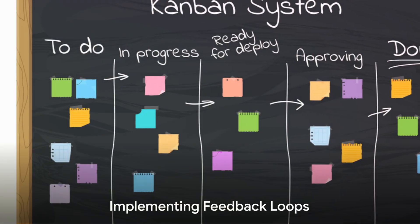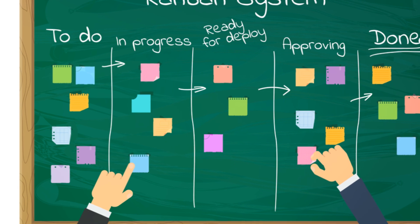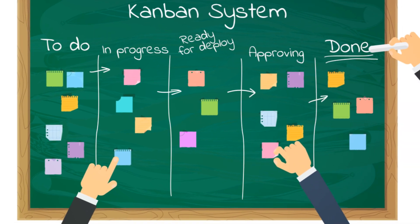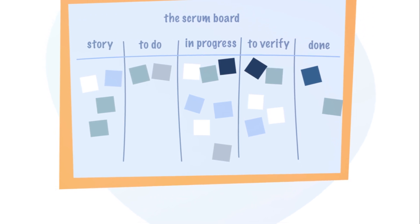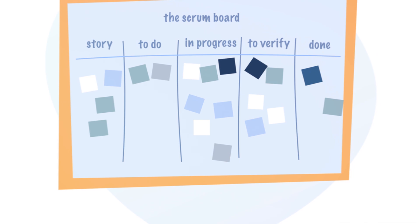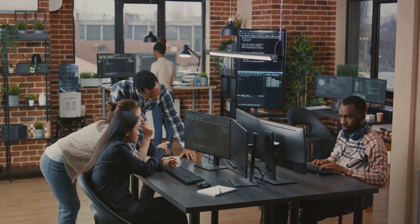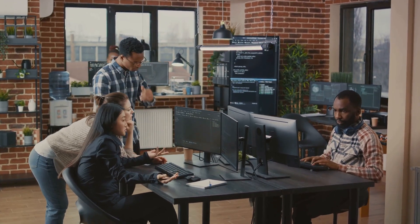Fifth, we have implementing feedback loops. Let's imagine we're part of a software development team — we're competent, we're diligent, but somehow we're always playing catch-up. Our projects are often delayed and we're not quite sure why. Then we decide to implement feedback loops. Think of feedback loops like a living, breathing conversation between our process and us.